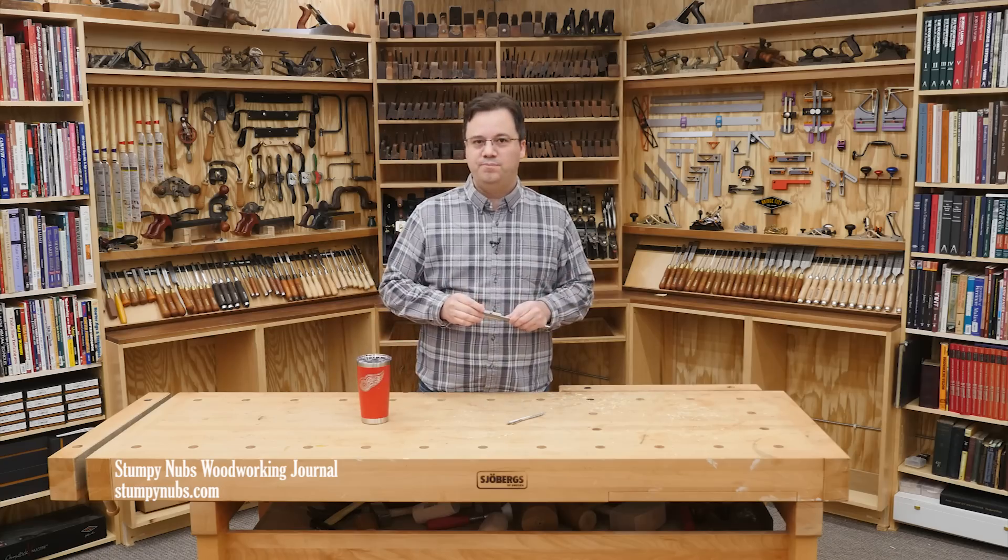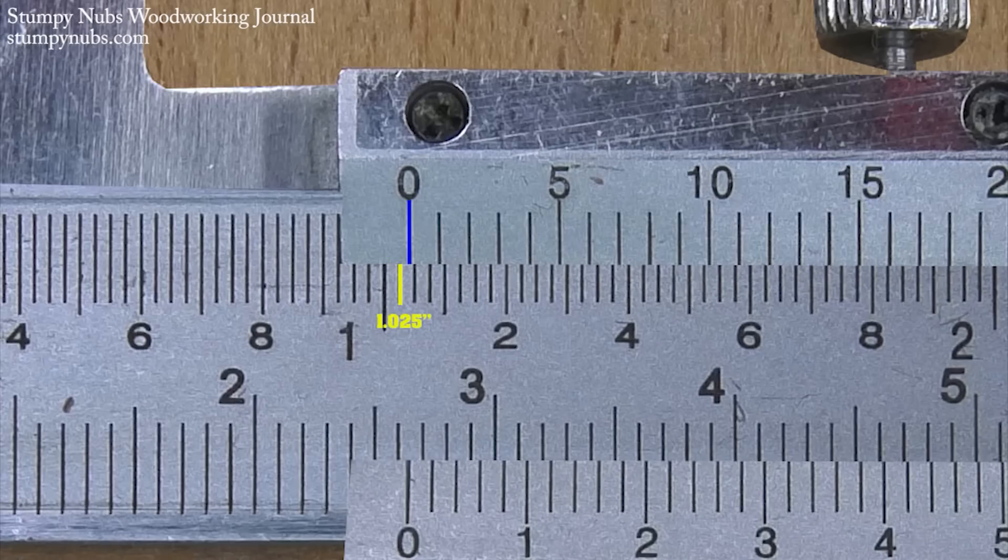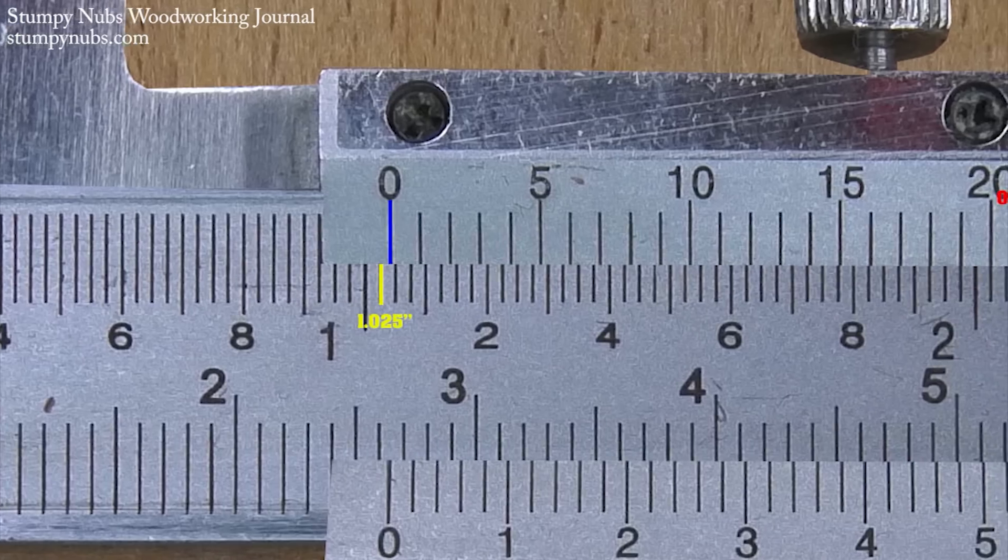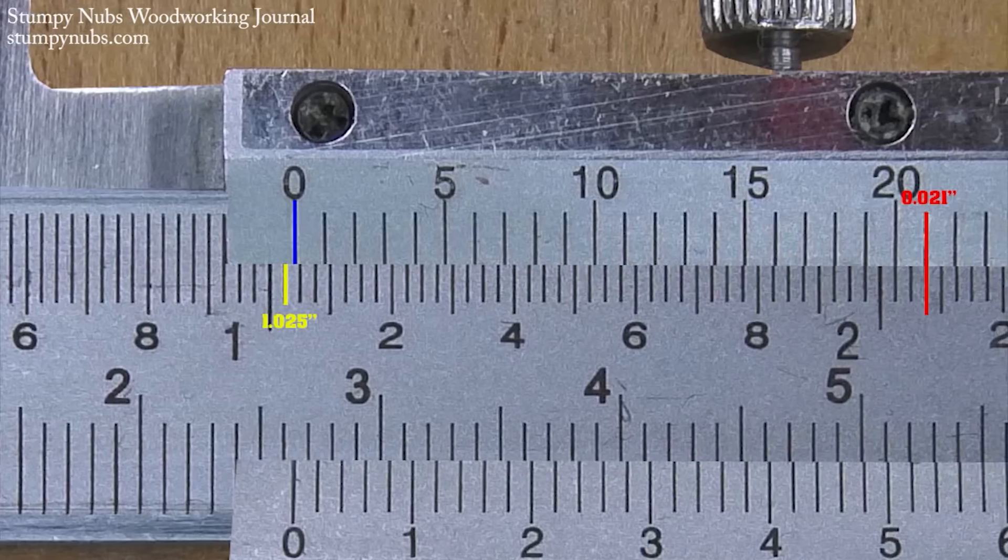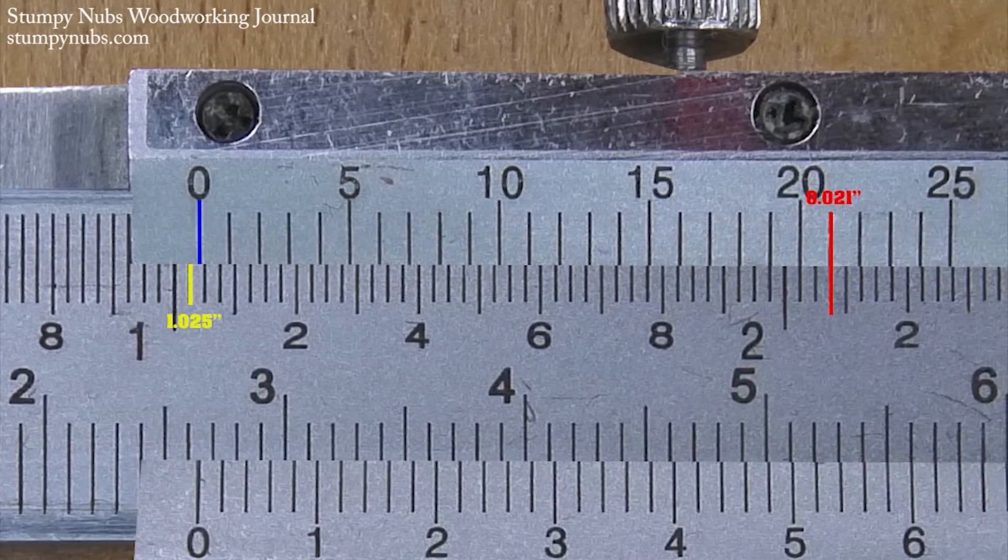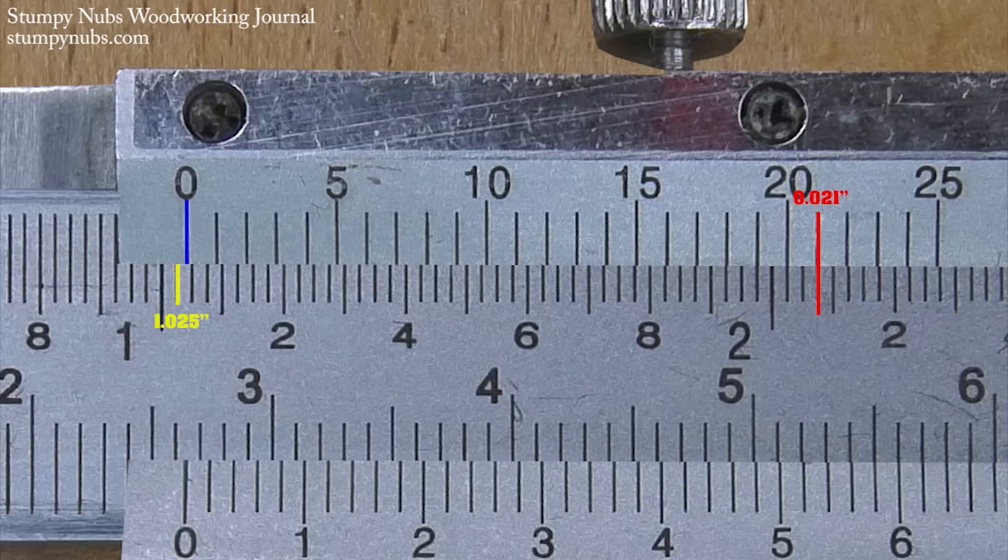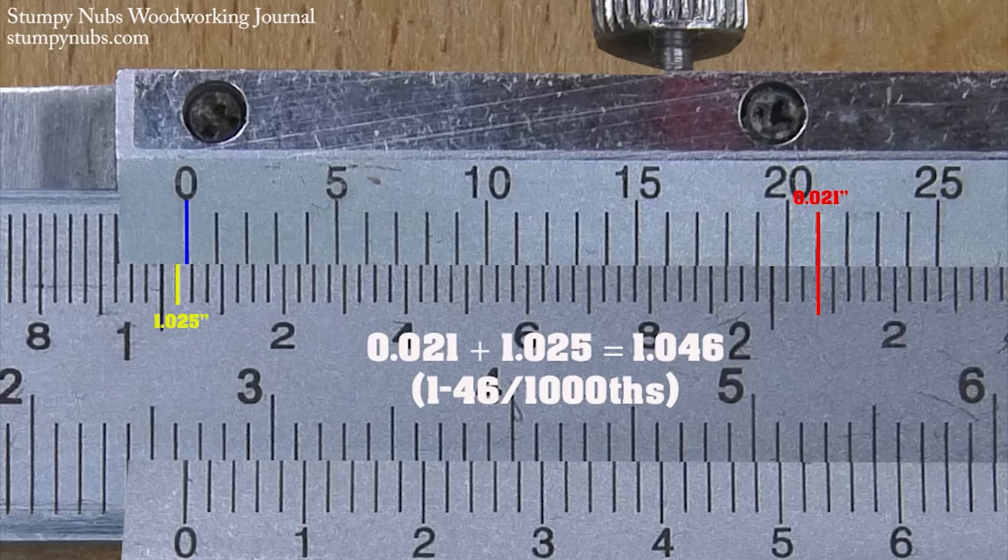Want to try another one? Here, the zero cursor is just past the one-point-zero-two-five point. Looking at the vernier scale to see that the nearest mark that aligns with a point on the main scale is twenty-one. Since those are thousandths, we're going to add point zero-two-one to our one-point-zero-two-five and we get one-point-zero-four-six, or one-point-zero-four-six thousandths of an inch.